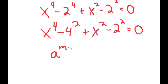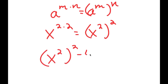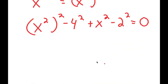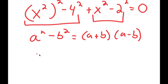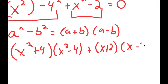Now, 2 to the power of 4 is 16, and 16 is the same thing as 4 squared. So I get x to the power of 4 minus 4 squared, plus x squared minus 2 squared. If I have something in the form a to the power of m times n, this is equal to a to the power of m to the power of n. So x to the power of 4 is the same as x squared to the power of 2. Notice how everything is in the power of 2, and using a squared minus b squared equals a plus b times a minus b, I get x squared plus 4 times x squared minus 4 plus x plus 2 times x minus 2 equals 0.